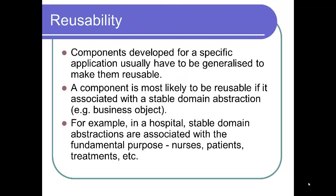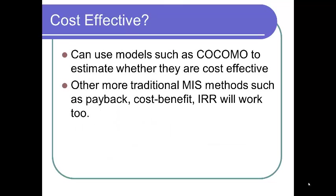The reality implies two decisions: is the component likely to be reused, and is the cost of developing the component justified? For reusability, components developed for a specific application usually have to be generalized. A component is most likely to be reusable if it's associated with a stable domain abstraction — for example, a business object. In a hospital, stable abstractions are nurses, patients, treatments, etc. For cost-effectiveness, models such as COCOMO or financial models like cost-benefit, payback, and internal rate of return can be used.